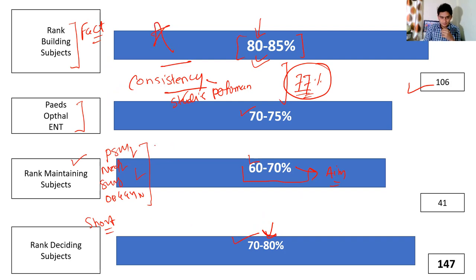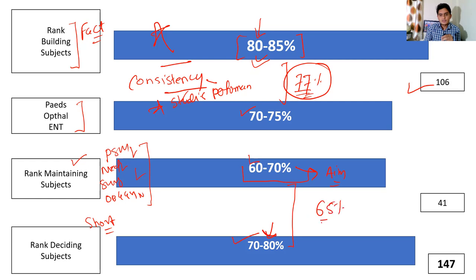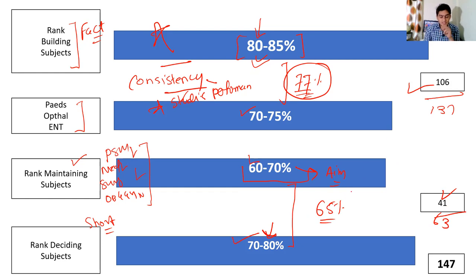Rank-building subjects are what will help you get a rank. If you combine rank-maintaining and rank-deciding subjects on an average with 65% accuracy, out of those 63 remaining questions you get around 41 right. So if you combine both: 106 from rank-building plus 41 from rank-maintaining and rank-deciding, you get 147 questions right out of 200, if you consistently improve your accuracy to that level.